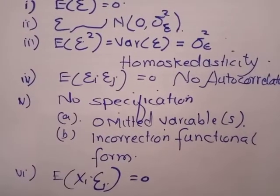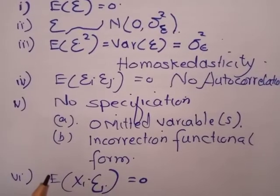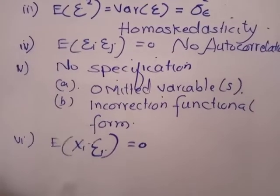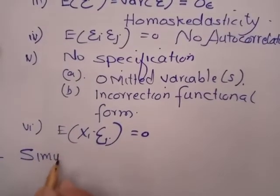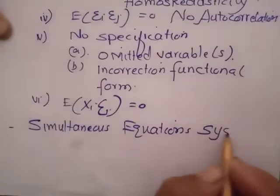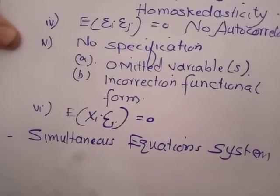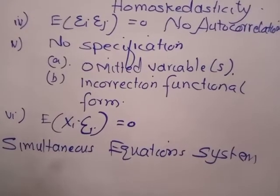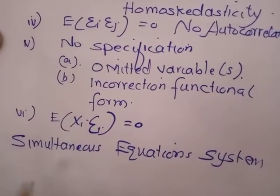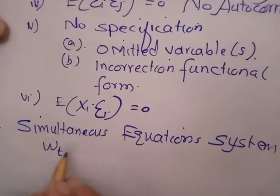When we are unable to distinguish between the dependent and independent variables — sometimes called endogenous and exogenous, or explained and explanatory variables — then the system is a simultaneous equation system. In such a system, one variable depends on the other, and the other depends back on the first.